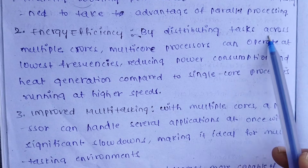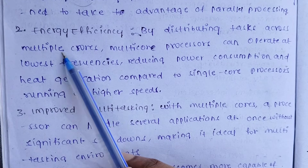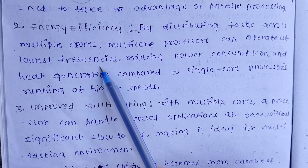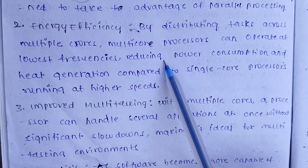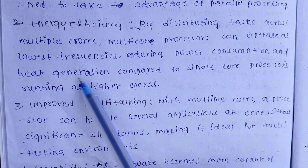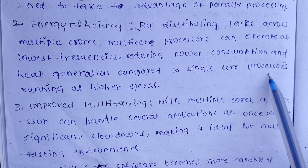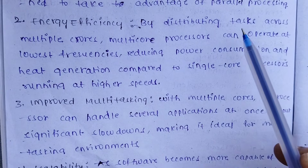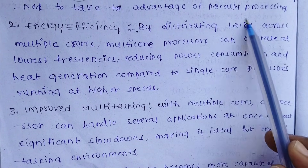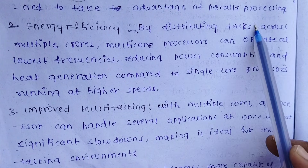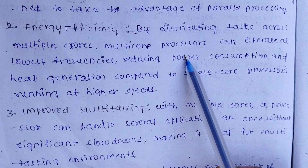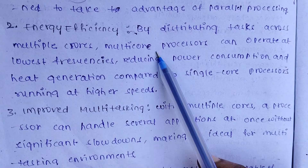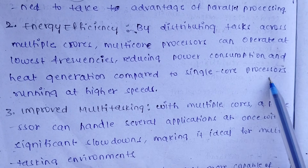Advantage 2: Energy efficiency. By distributing tasks across multiple cores, multi-core processors can operate at lower frequencies, reducing power consumption and heat generation compared to single-core processors running at higher speeds.